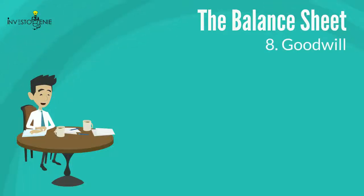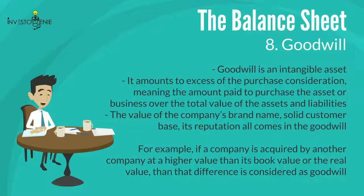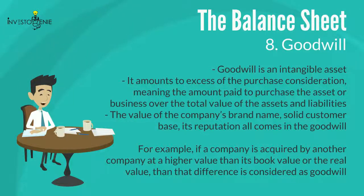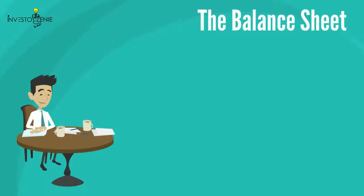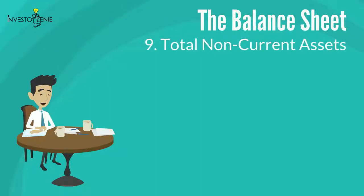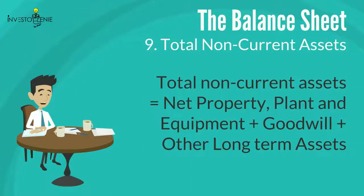Eight: goodwill is an intangible asset. It amounts to the excess of the purchase consideration — the amount paid to purchase the asset or business — over the total value of the assets and liabilities. The value of the company's brand name, solid customer base, and its reputation all come under goodwill. For example, if a company is acquired at a higher value than its book value, that difference is considered goodwill. Nine: total non-current assets is the sum of property, plant and equipment, goodwill, and other minor long-term assets found on the balance sheet.